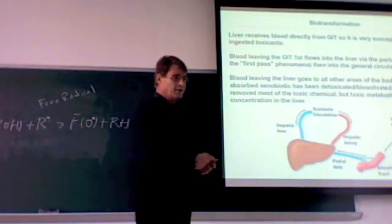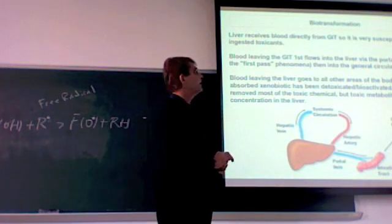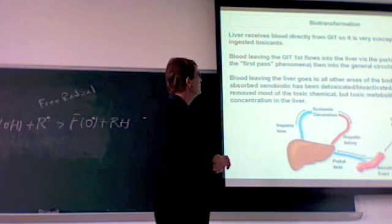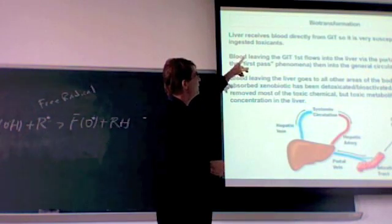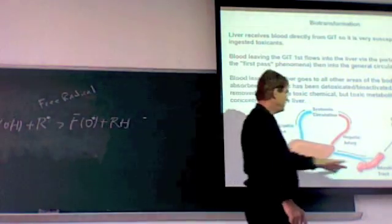This is again, just to emphasize that the liver is really vulnerable to all these toxins. Because it's the main source. The liver receives blood directly from the GIT, the gastrointestinal tract.